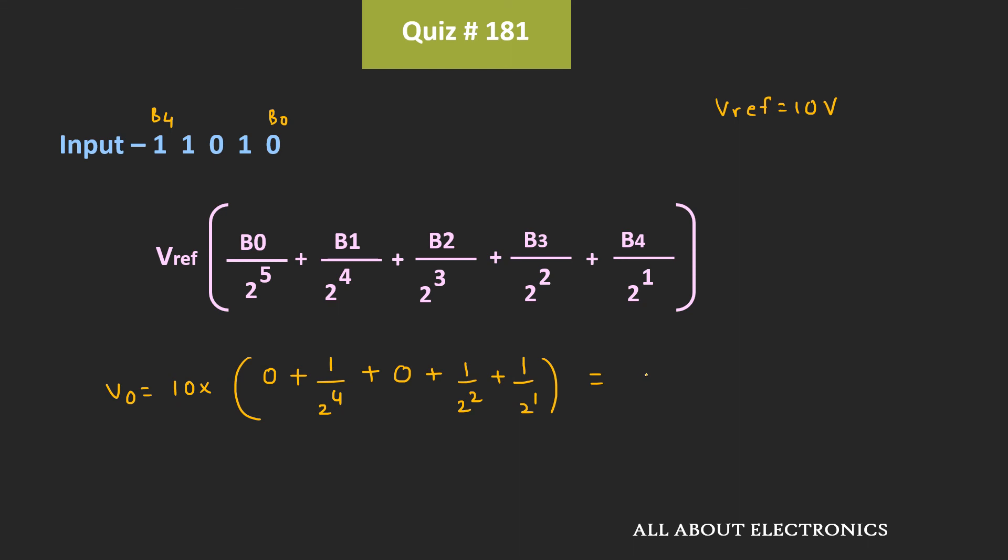That means the output voltage Vout is equal to 10 times 1 by 16 plus 1 by 4 plus 1 by 2. That is equal to 10 times 13 divided by 16. And if you calculate the value, then the output voltage Vout will come out as 8.125V.